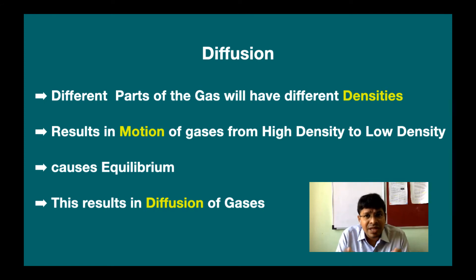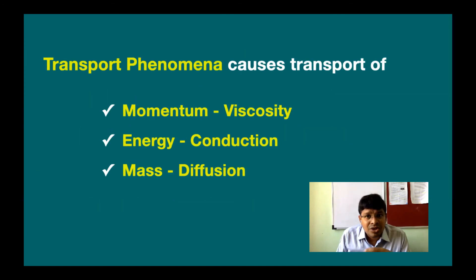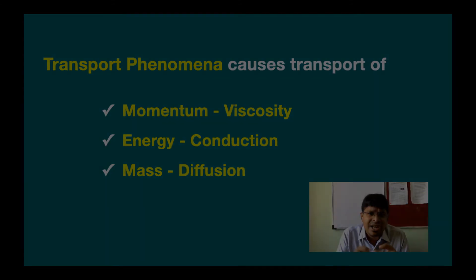Similarly, with diffusion, different parts of the gases will have different densities. These differences in density cause gas molecules to move from higher density to lower density, thus distributing mass uniformly. So transport phenomena — the transport of gases due to differences in energy, mass, and momentum — can be discussed using viscosity, conduction, and diffusion.